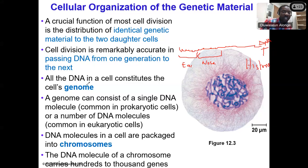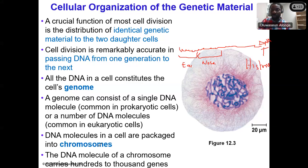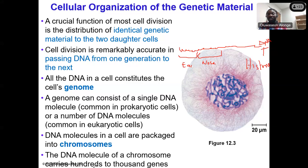So all the DNA in a cell constitutes a genome. A genome can consist of a single DNA, seen in prokaryotic cells, or multiple DNA molecules, seen in eukaryotic cells. DNA molecules in a cell are packed into chromosomes, and the DNA molecule of a chromosome carries hundreds to thousands of genes.